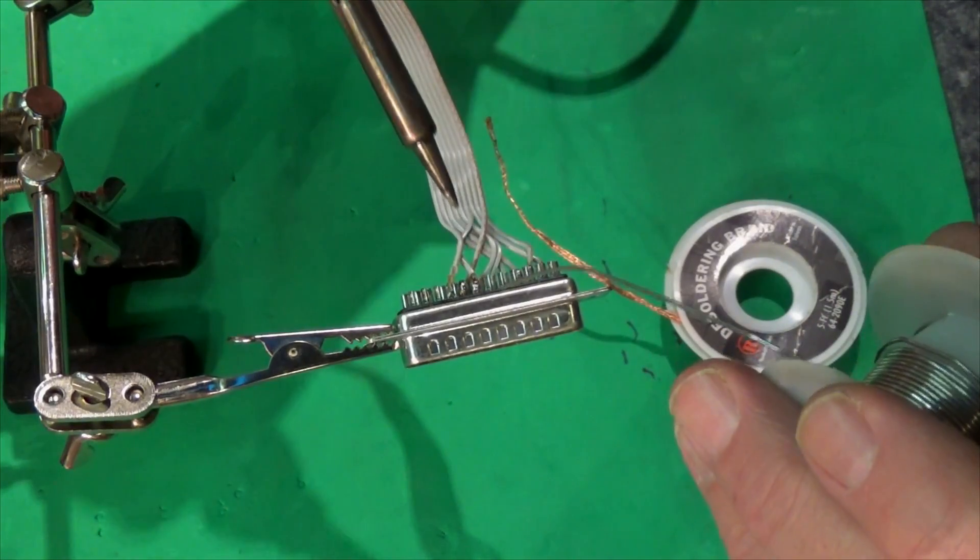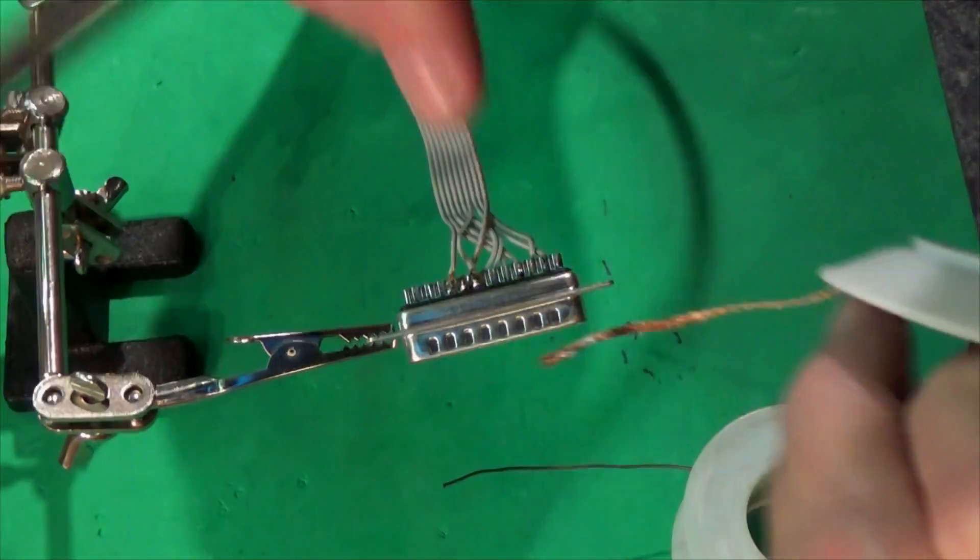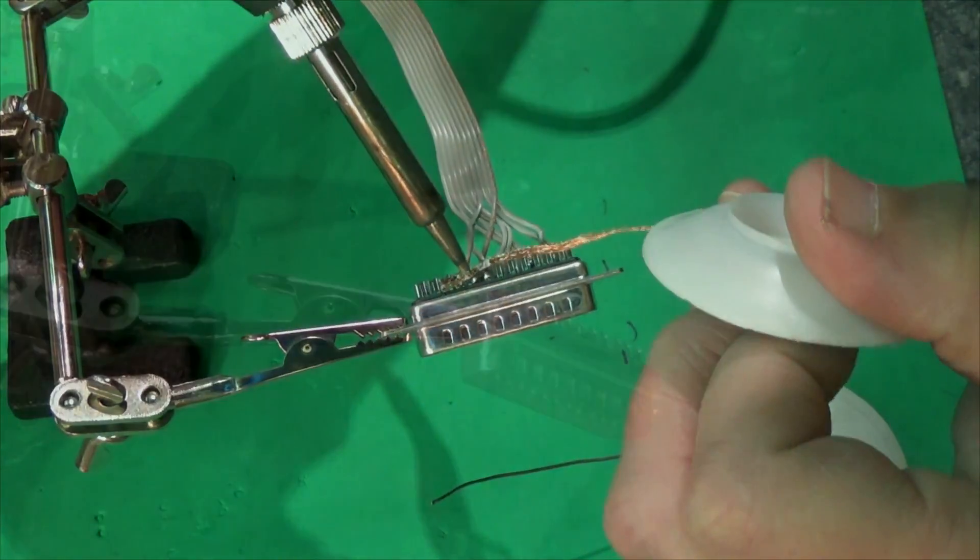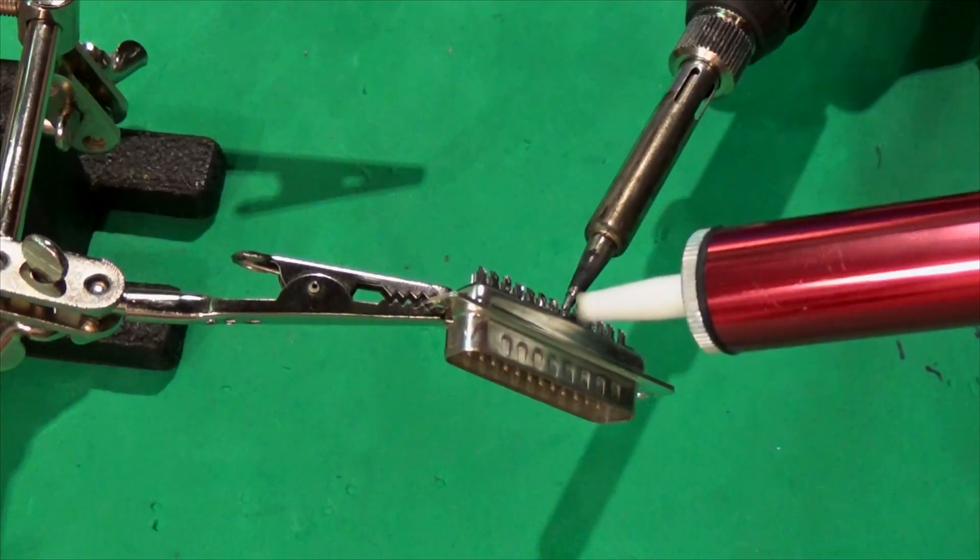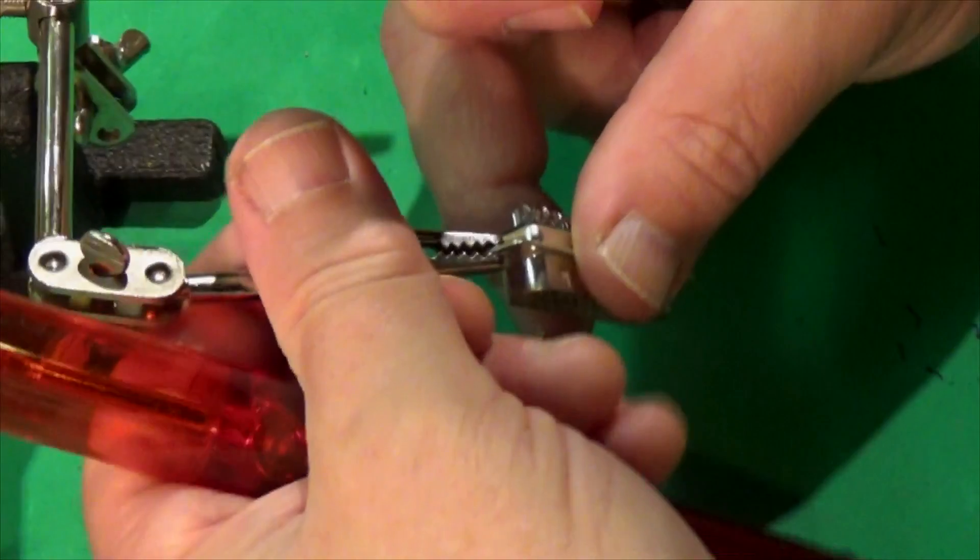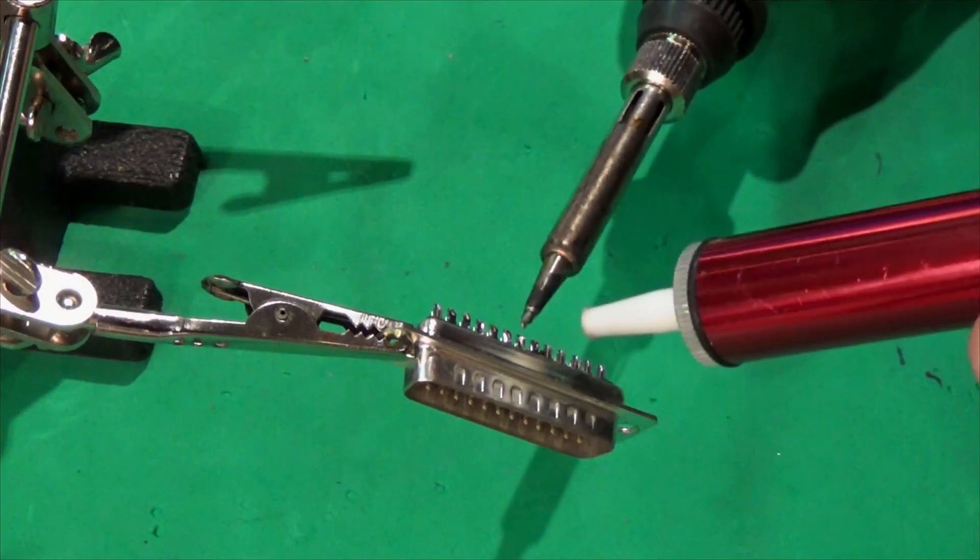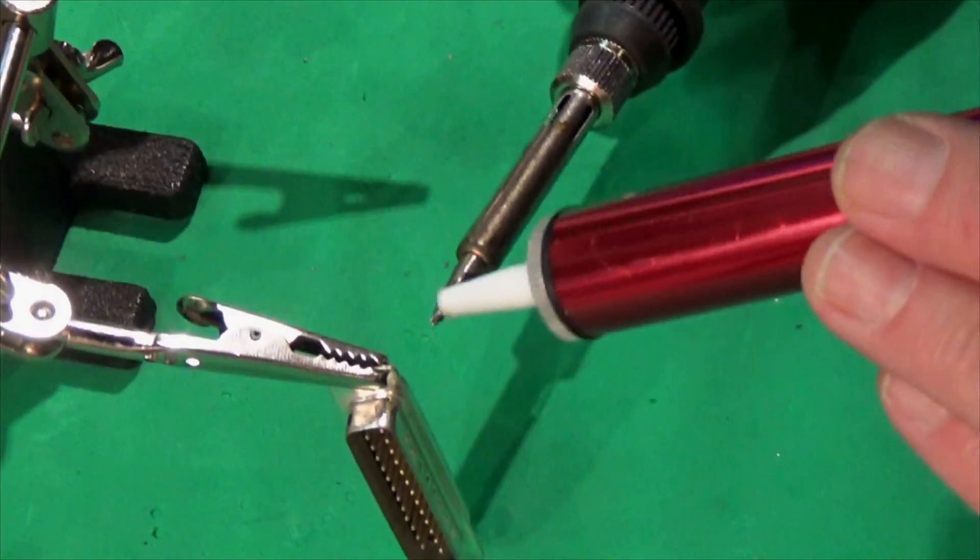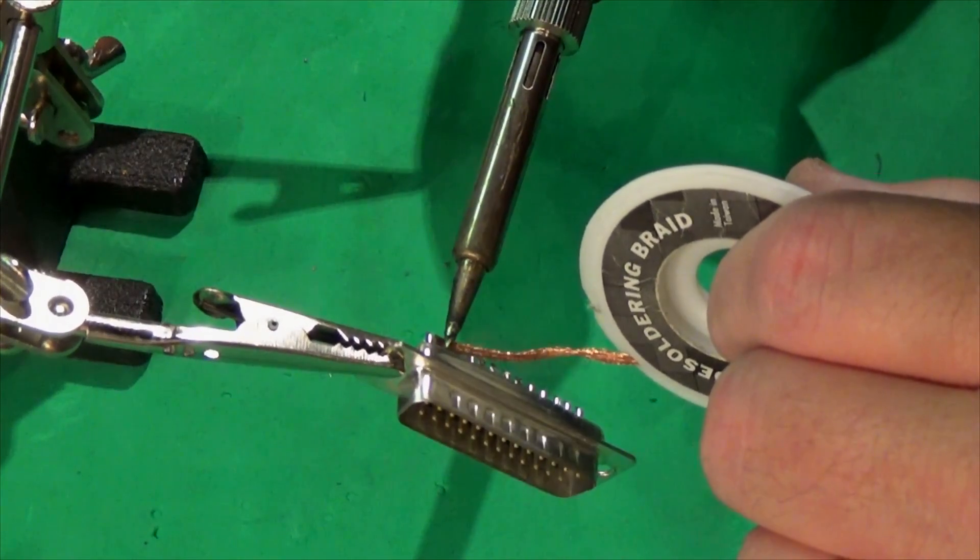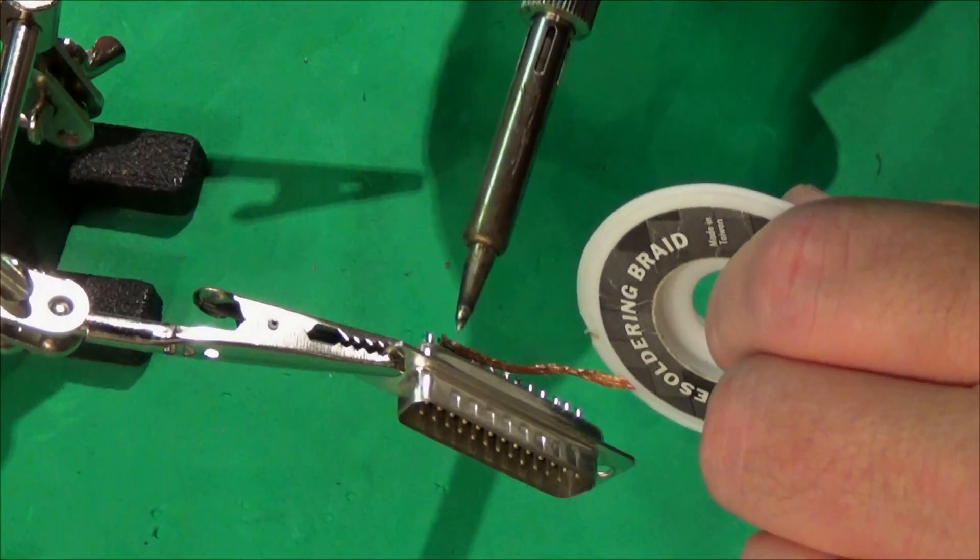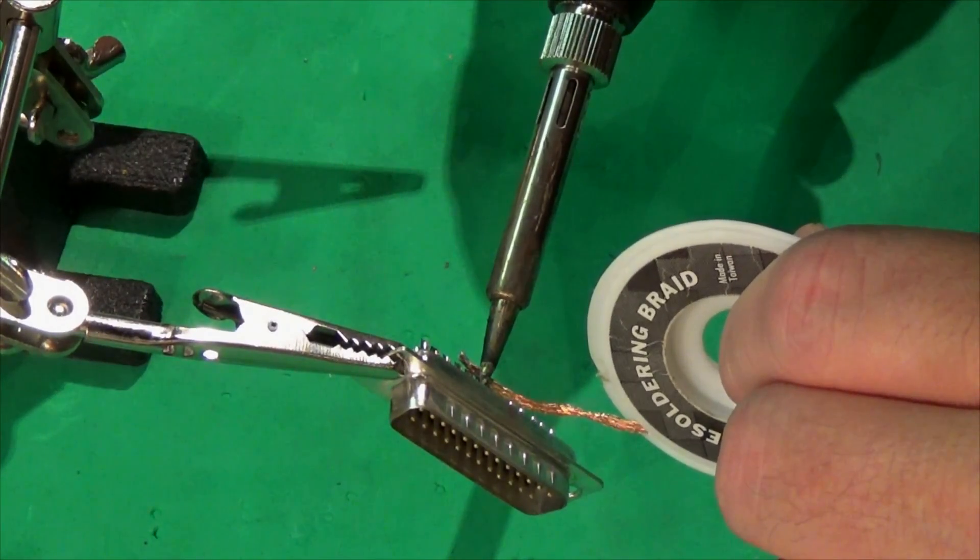The old solder sucker is pretty handy for removing this. It's working okay. What do you guys like to use better - the braid or the solder sucker? I guess they both have their advantages.